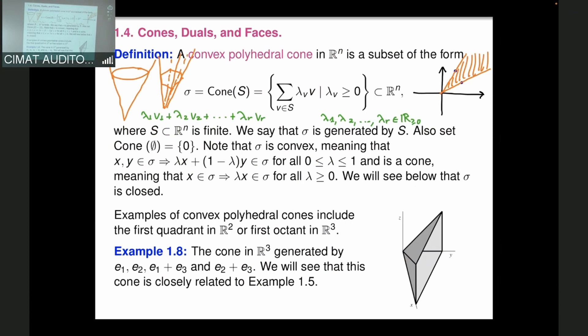Regarding cones containing lines: allowing them would introduce extra C* factors in the corresponding toric varieties, which we prefer to handle separately. So we will assume 'strongly convex' — meaning the cone contains no line — in a couple of slides. For example, the cone generated by e_1 and -e_1 in R^2 contains the entire x-axis and is therefore not strongly convex.